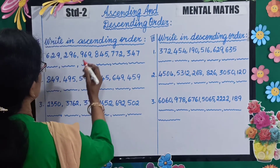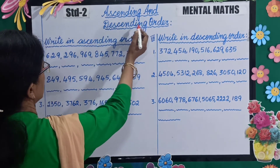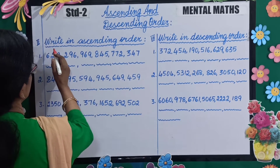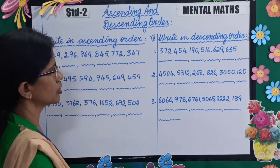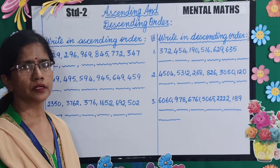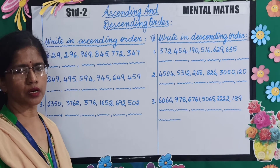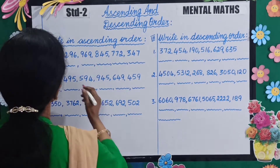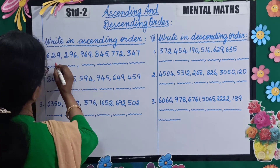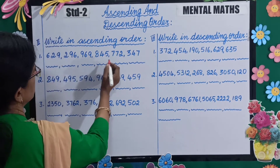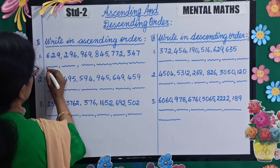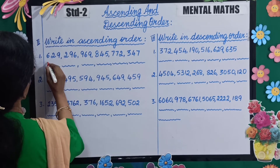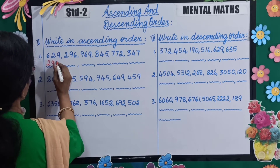Our next topic is ascending and descending order. Write in ascending order. Ascending order means from small to big. So you will see which is the smallest number — it's 296, so you will write that first.